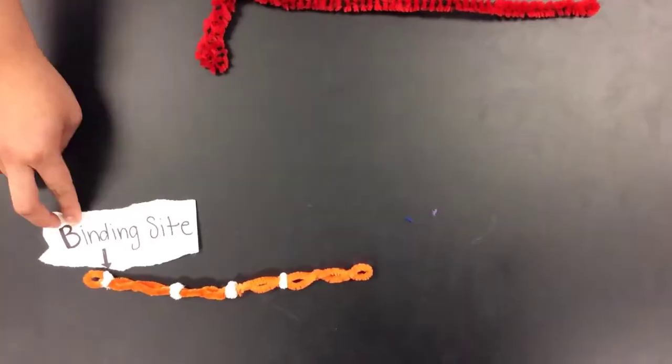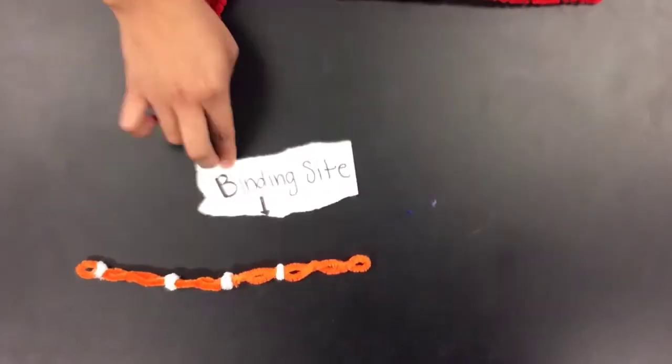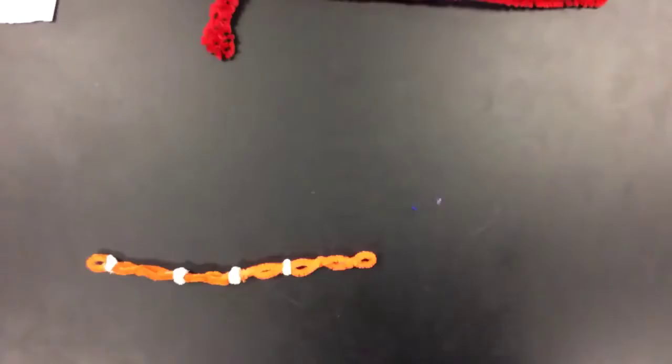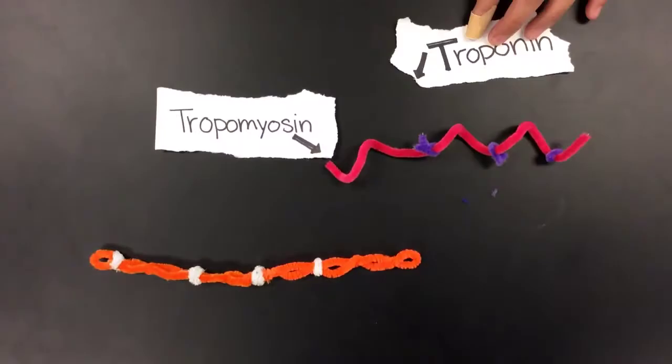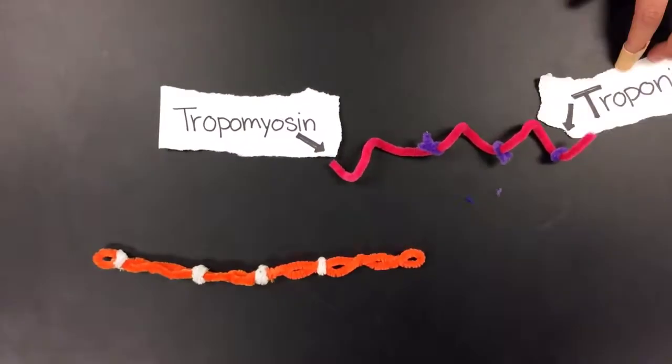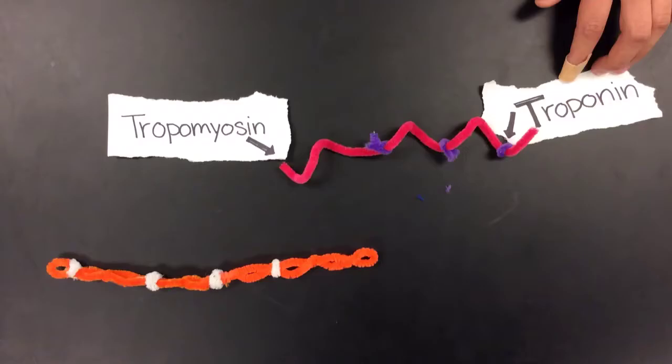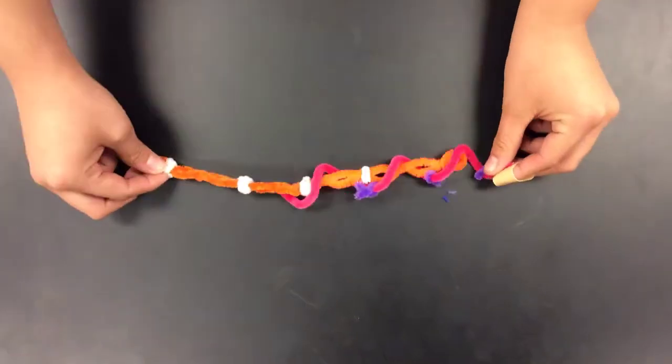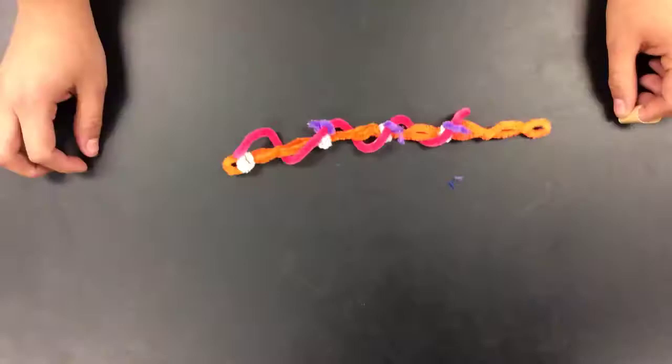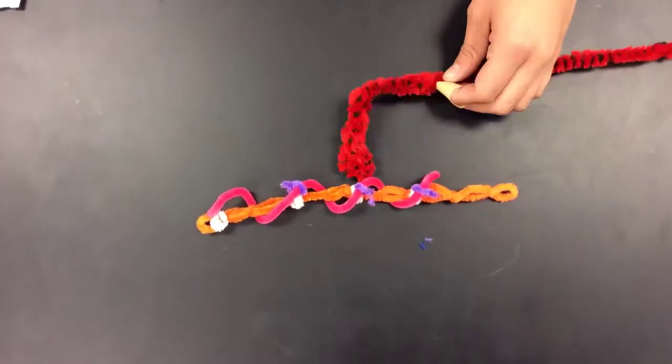If we take a closer look at how the actin fiber and the myosin head attach, we can see that the actin fiber has binding sites. And these binding sites are covered by tropomyosin and troponin. Tropomyosin wraps around an actin fiber and the troponin blocks these binding sites.